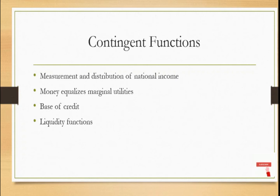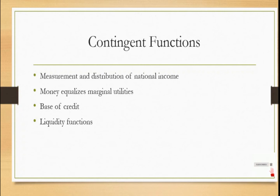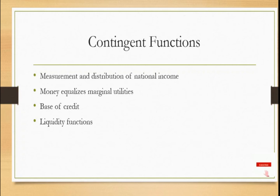Moving on to the contingent function, which includes measurement and distribution of national income. It is very difficult — almost impossible — to imagine a world without money, because economic growth cannot be explained or understood without the concept of money itself. The majority of economic concepts like national income, GDP, GNP, and per capita income are all expressed in terms of money.